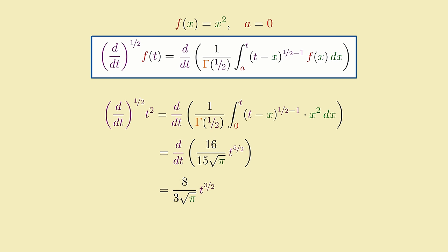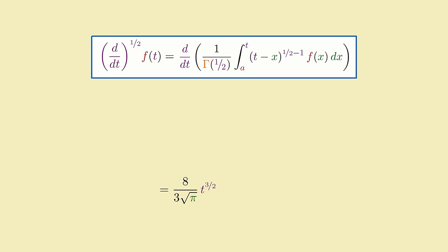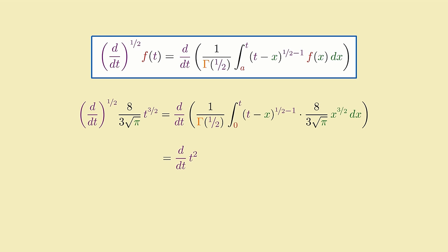And if we use it to compute the half derivative of, say, x squared, we get 8 over 3 times the square root of pi times t to the 3 over 2, which is the same as what we got when we computed the half integral of 2x. And if we follow this up with another half derivative, we get 2t, the regular whole derivative of t squared. So we seem to have found a legitimate way to take a half derivative.